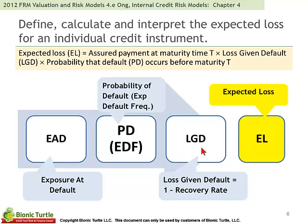Loss given default is not so simple — it's the one that is difficult to parameterize. As Ong says, when we see a loss given default of 65%, we should know that that point estimate is very imprecise. It's probably more appropriate to give it a range, or best a flexible distribution. So loss given default is very uncertain, difficult to parameterize, and unlike the probability of default, we don't have easy access to its variance.